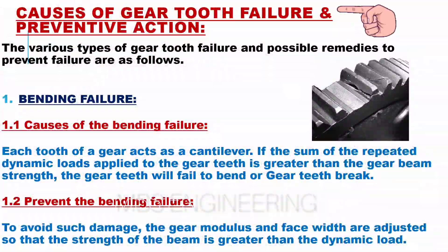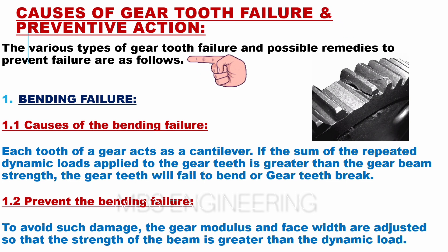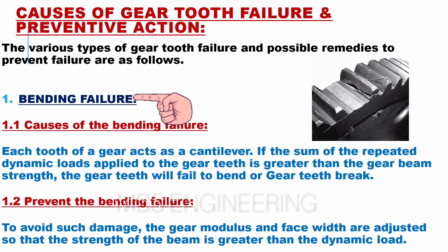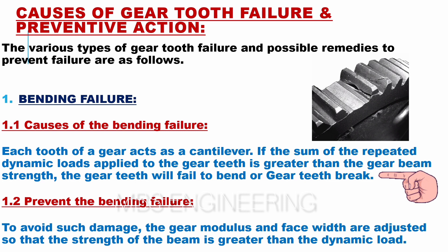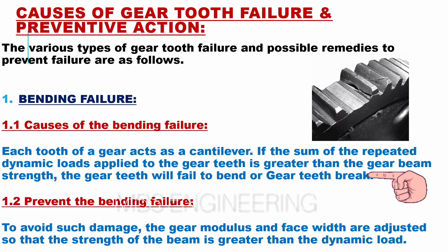The main causes of bending failure: each tooth of a gear acts as a cantilever. If the sum of the repeated dynamic loads applied to the gear teeth is greater than the gear beam strength, the gear teeth will fail and bend or break.